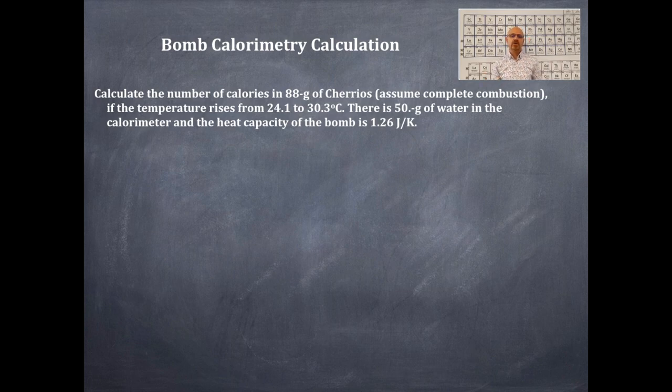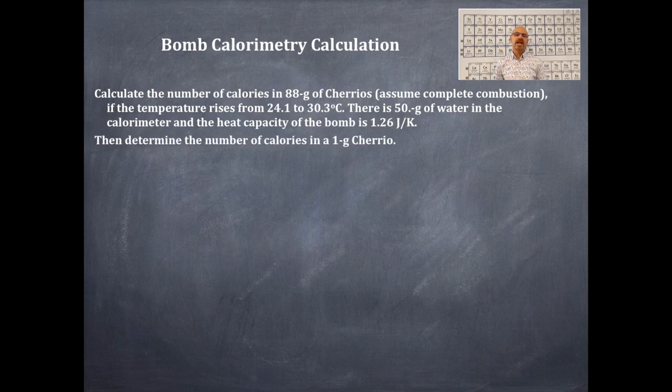So here's our problem. We're going to calculate the number of calories in 88 grams of Cheerios, assuming complete combustion of those Cheerios, if the temperature rises from 24.1 to 30.3 degrees Celsius. There is 50.0 grams of water inside the calorimeter, and the heat capacity of the bomb is 1.26 joules per Kelvin. Remember, Kelvin and degrees Celsius have the same interval, so the change in temperature is the same, whether it's Kelvin or degrees Celsius. We're going to then determine the number of calories in one gram of a Cheerio.